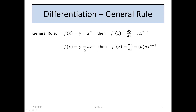If there's a coefficient before x to the n, then you say f(x) equals y equals ax to the n. In that case, f'(x), dy/dx — the first derivative — is a times n times x to the n minus 1. Again, the n comes down as a multiplier, and then n is reduced by 1.